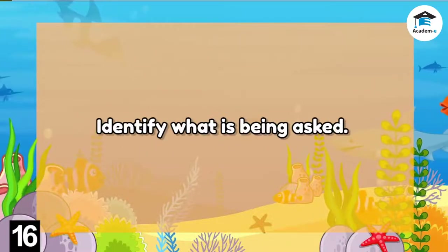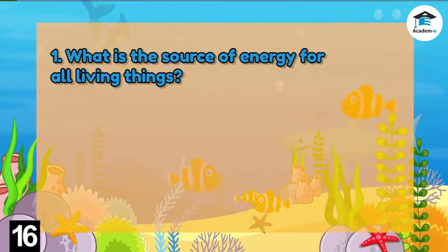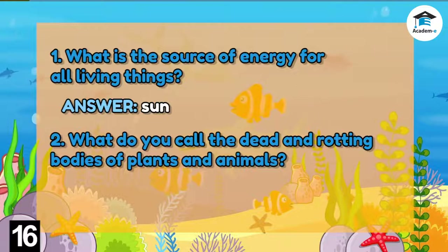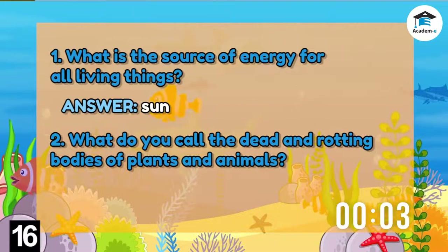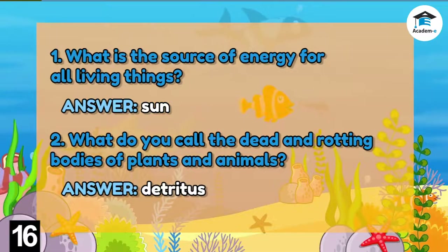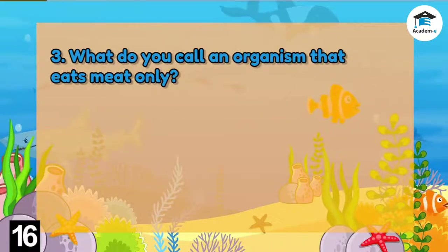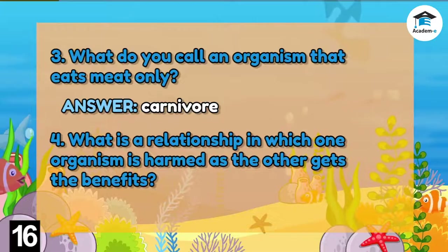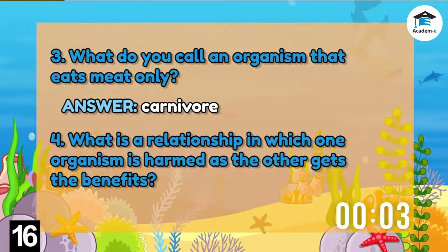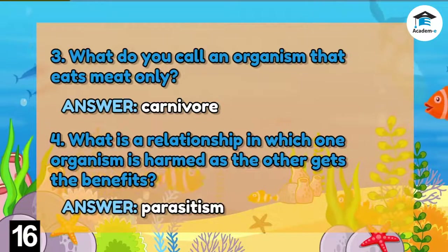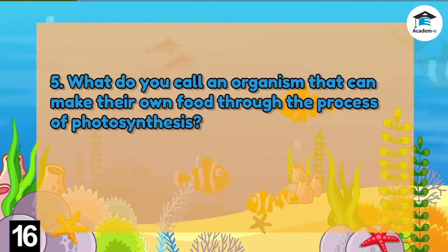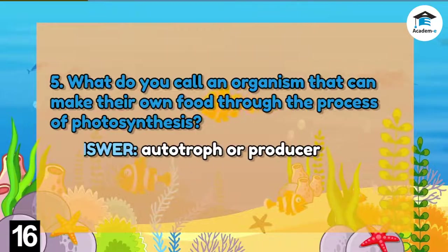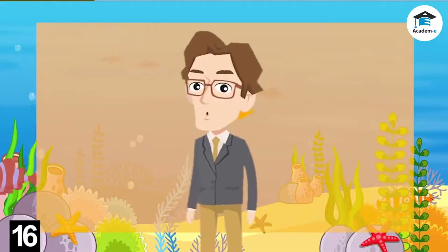Let's have a short exercise. One: What is the source of energy for all living things? The answer is the sun. Two: What do you call the dead and rotting bodies of plants and animals? The answer is detritus. Three: What do you call an organism that eats meat only? The answer is carnivore. Four: What is a relationship in which one organism is harmed as the other gets the benefits? The answer is parasitism. Five: What do you call an organism that can make its own food through photosynthesis? The answer is autotroph, or producer.